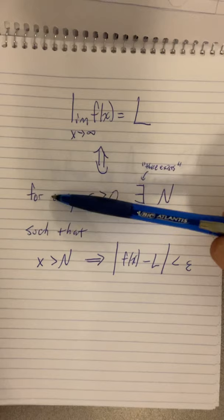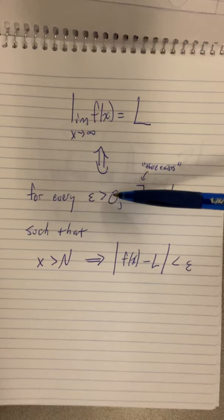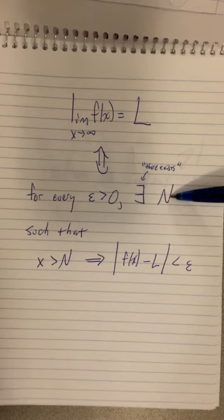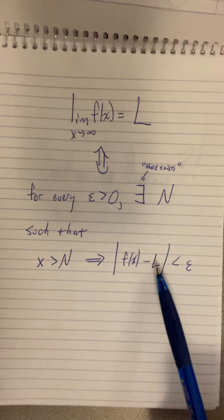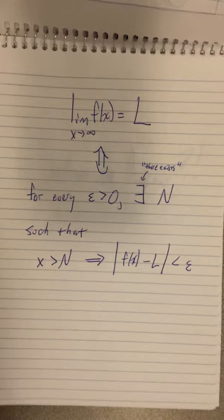if and only if for every epsilon, this is the epsilon symbol in the Greek alphabet, for every epsilon that's greater than zero, there exists N such that when x is greater than N, it is guaranteed that the absolute value difference of the function and the limit is less than epsilon.